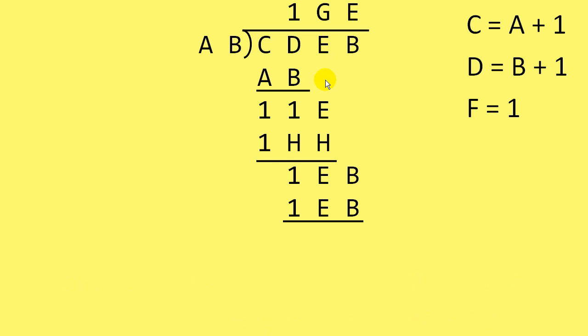So E is brought down, and then the next digit in the quotient would be multiplied times the divisor. That means that G would be multiplied times AB to get a result of 1HH. So we can say G times AB is 1HH. What does that imply? Nothing that I can see so far, so we'll just move on.